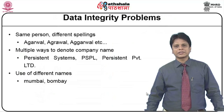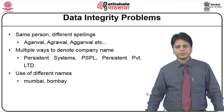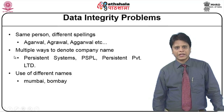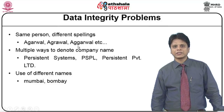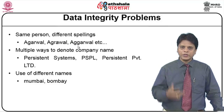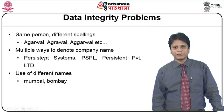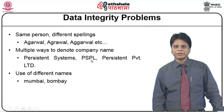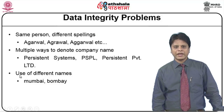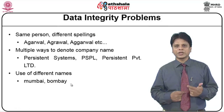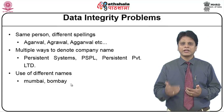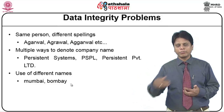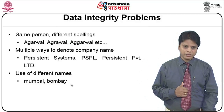For converting this, we come across a lot of data integrity problems. Like the same person having different spellings — Agarwal, Agarwal with different variations or with a G inserted. This would give us a lot of missing values and integrity issues. Multiple ways to denote a company's name — persistent systems, PSPL, persistent private limited, and so on. And use of different names for cities like Mumbai and Bombay. This would ultimately confuse the user. Sometimes records stored with Bombay should also be recovered when a user queries Mumbai. This transformation process looks after that.